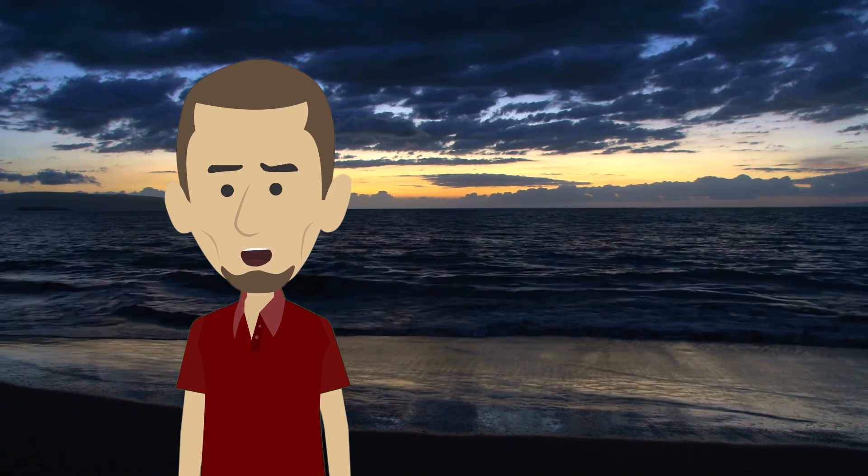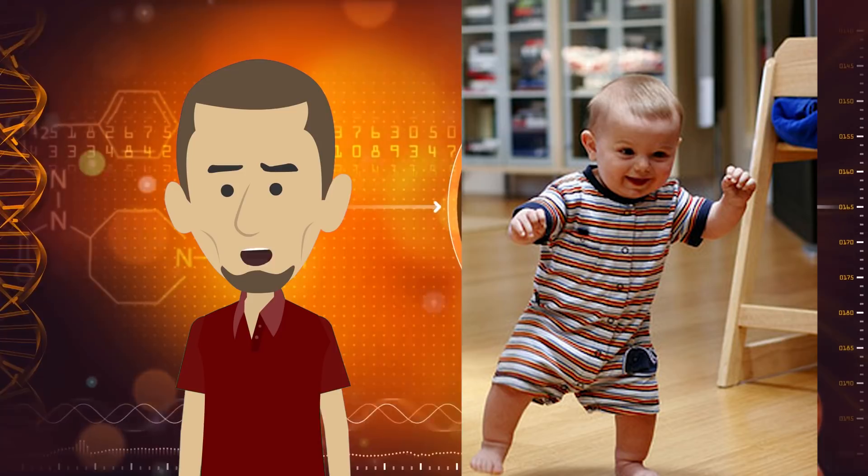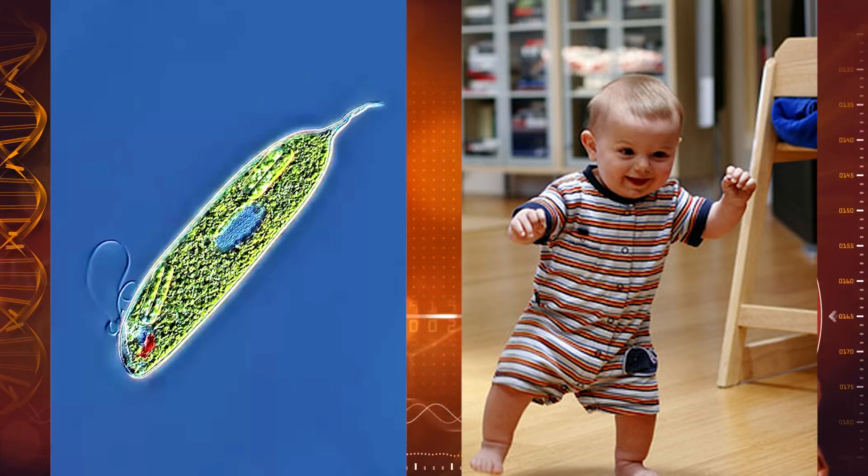The more similar two organisms are, the more DNA sequences they have in common. That's why you share more DNA with a chimp than with a lemur, and even less with a single-celled euglena.